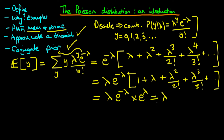So we get lambda times e to the power minus lambda times e to the power lambda. The minus lambda and the lambda cancel, and we're left with the mean of this process being lambda. This proves that lambda is the mean rate of occurrence of the events which we're counting.